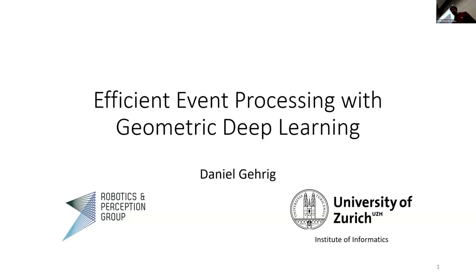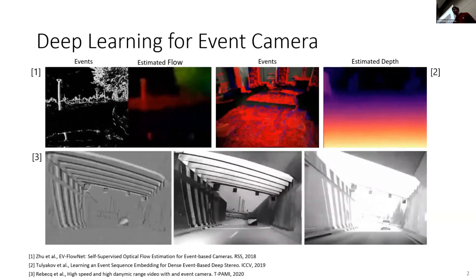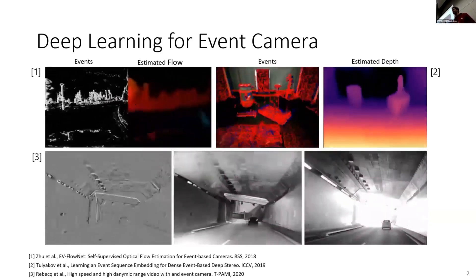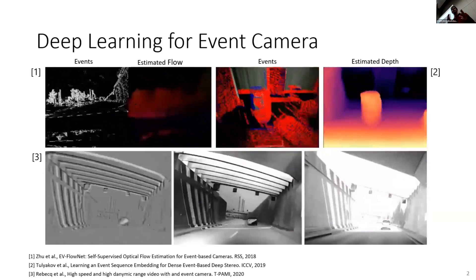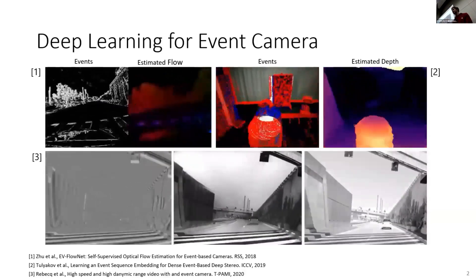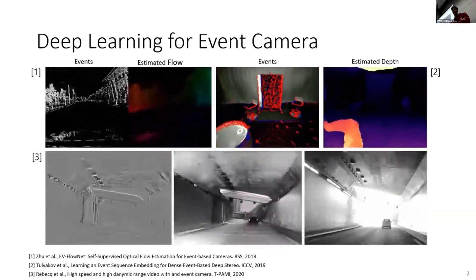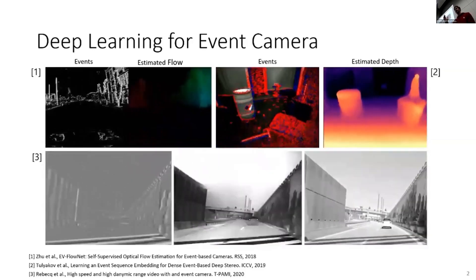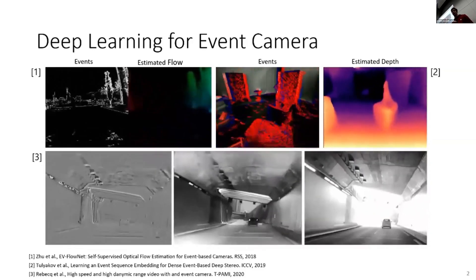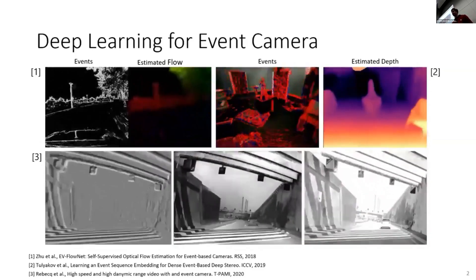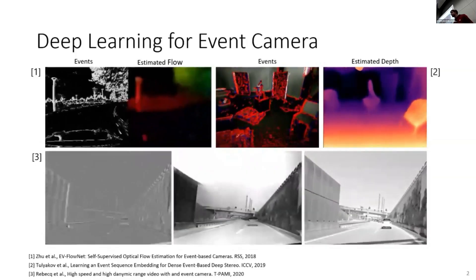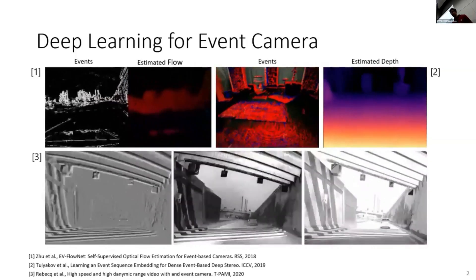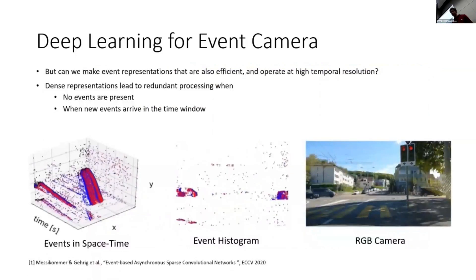The main motivation for this work is that there are now a lot of papers that use dense representations of events, process them with a CNN, and generate some output. These achieve very high performance, but as you might admit, it's not the way we should process events — they're dense, and we're processing artificially generated zeros.